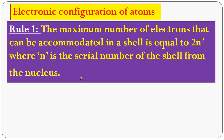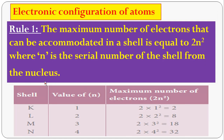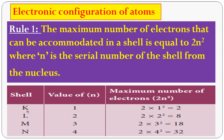Electronic configuration of atoms. How to write the electronic configuration? You have three rules. The first rule: the maximum number of electrons that can be accommodated in a shell is equal to 2N², where N is the serial number of the shell from the nucleus. There are four shells: K shell (N=1), L shell (N=2), M shell (N=3), N shell (N=4). For the K shell: 2 × 1² equals 2 electrons.